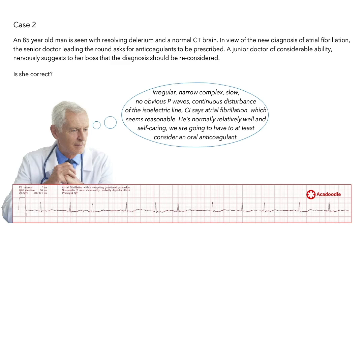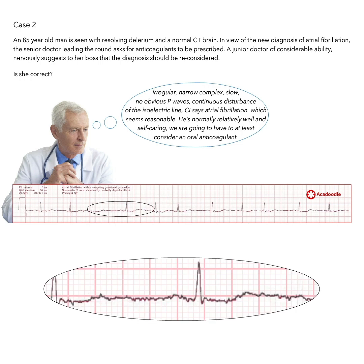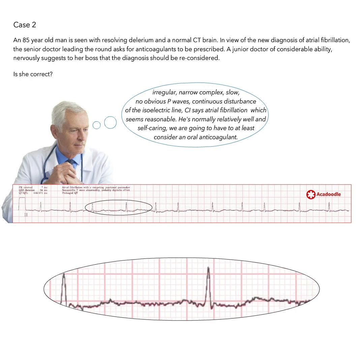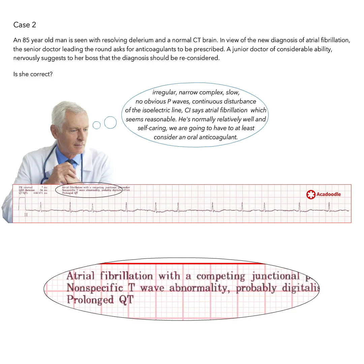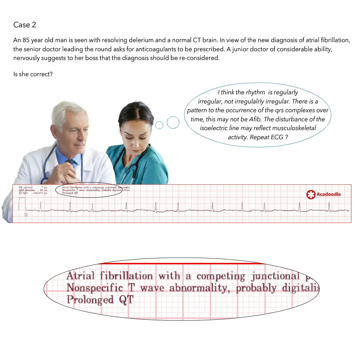When analysing this ECG, the senior doctor was misdirected by a combination of the apparently irregular ventricular rhythm, the disturbance of the isoelectric line, and the reported computer interpretation of atrial fibrillation. The eagle-eyed junior spotted a pattern to the occurrence of the QRS complexes on the ECG and correctly questioned the computer interpretation.